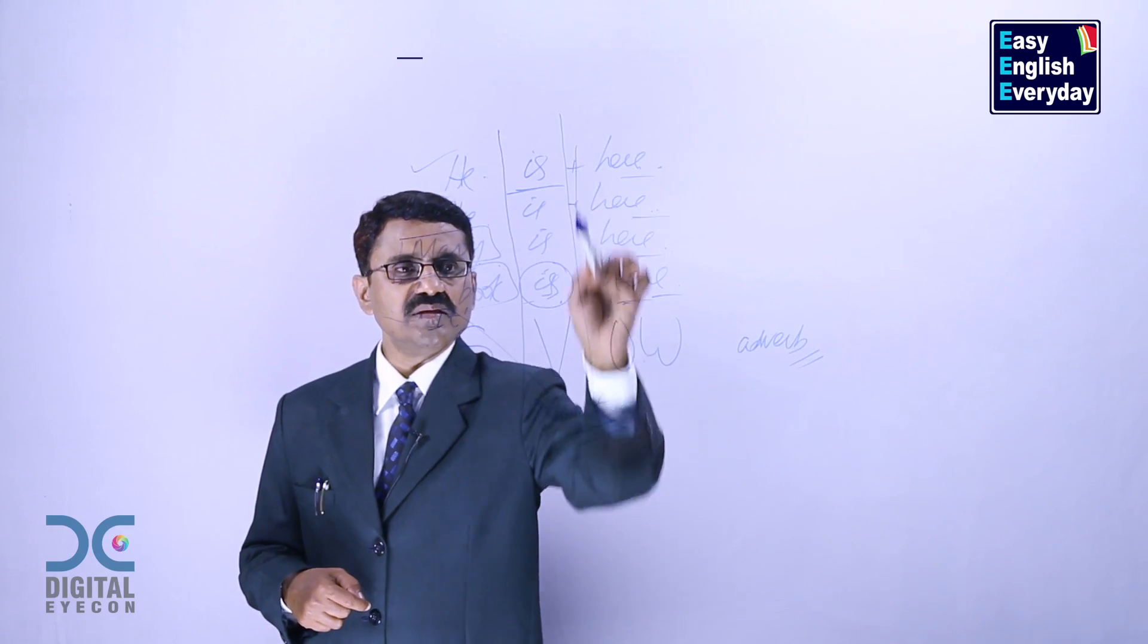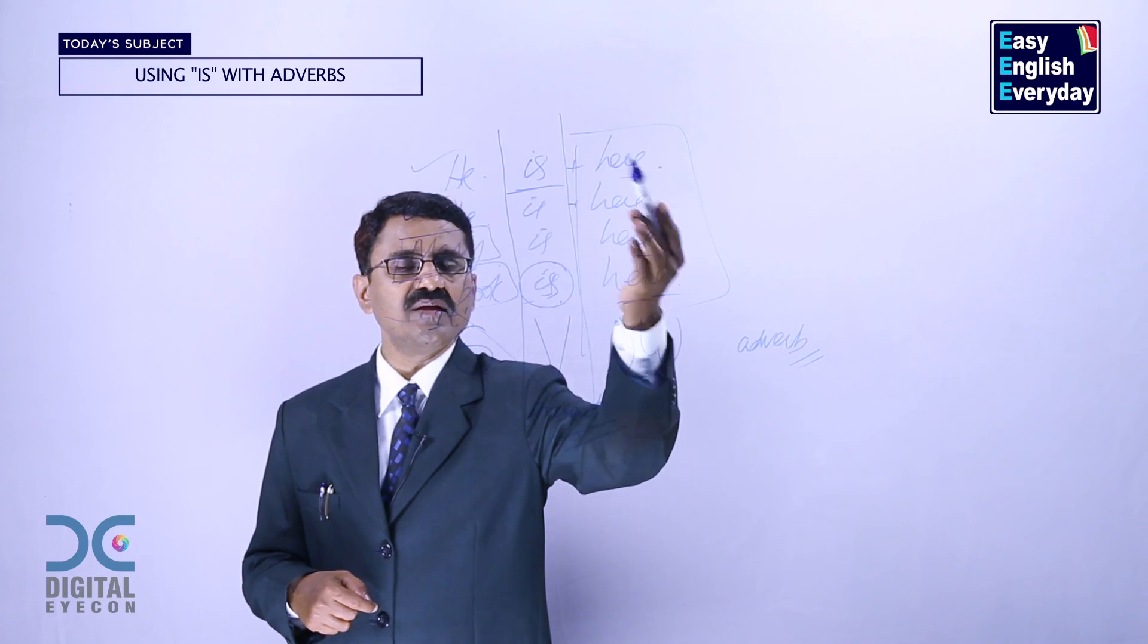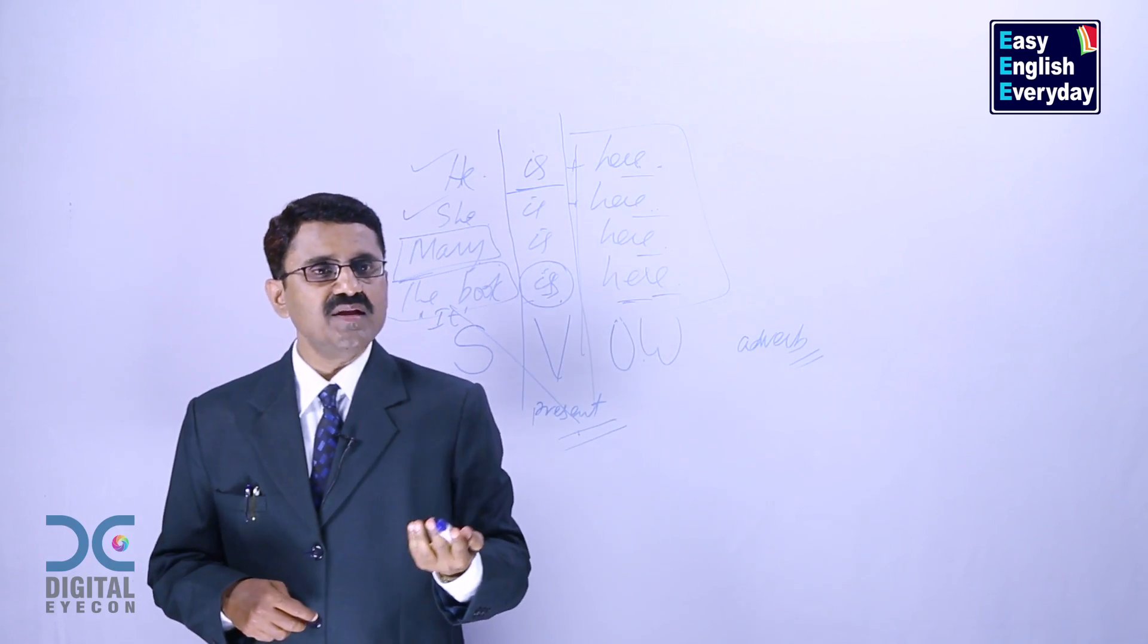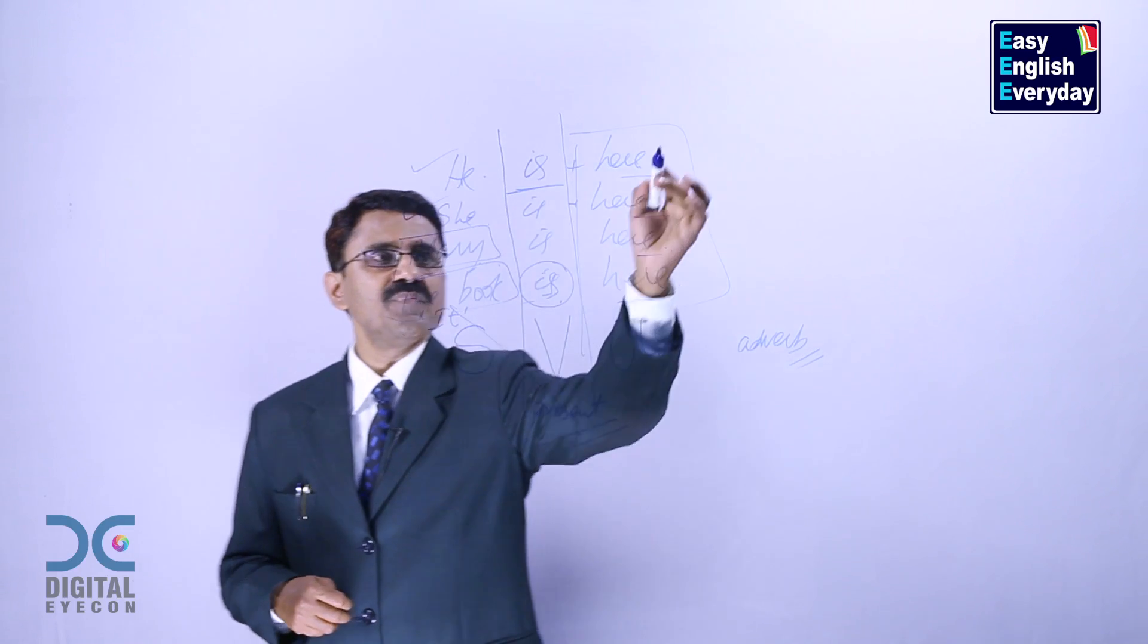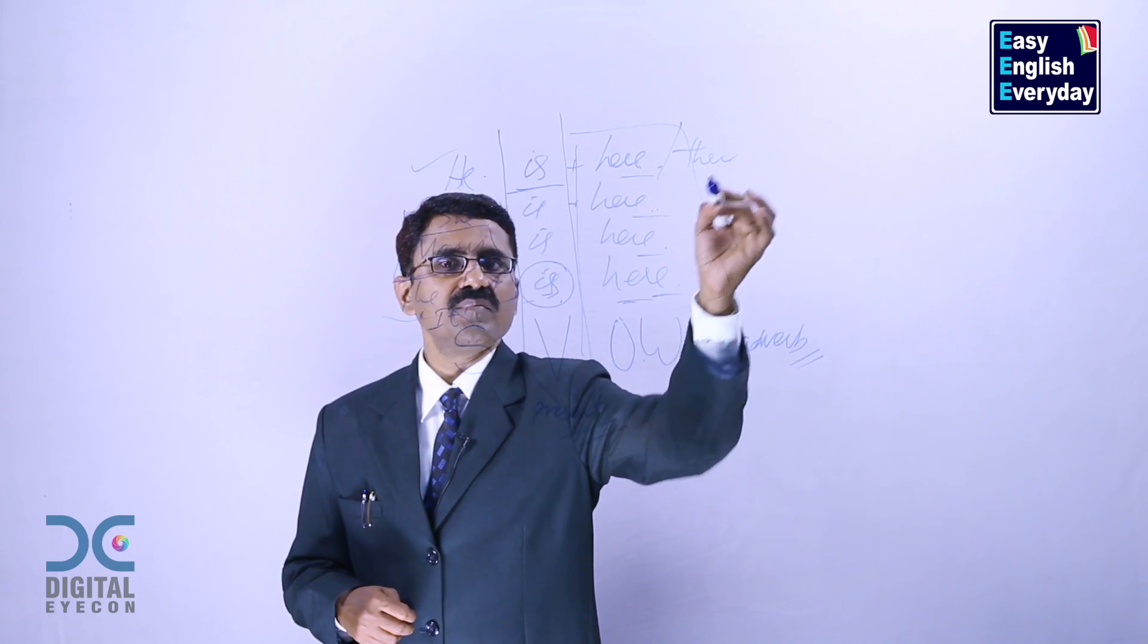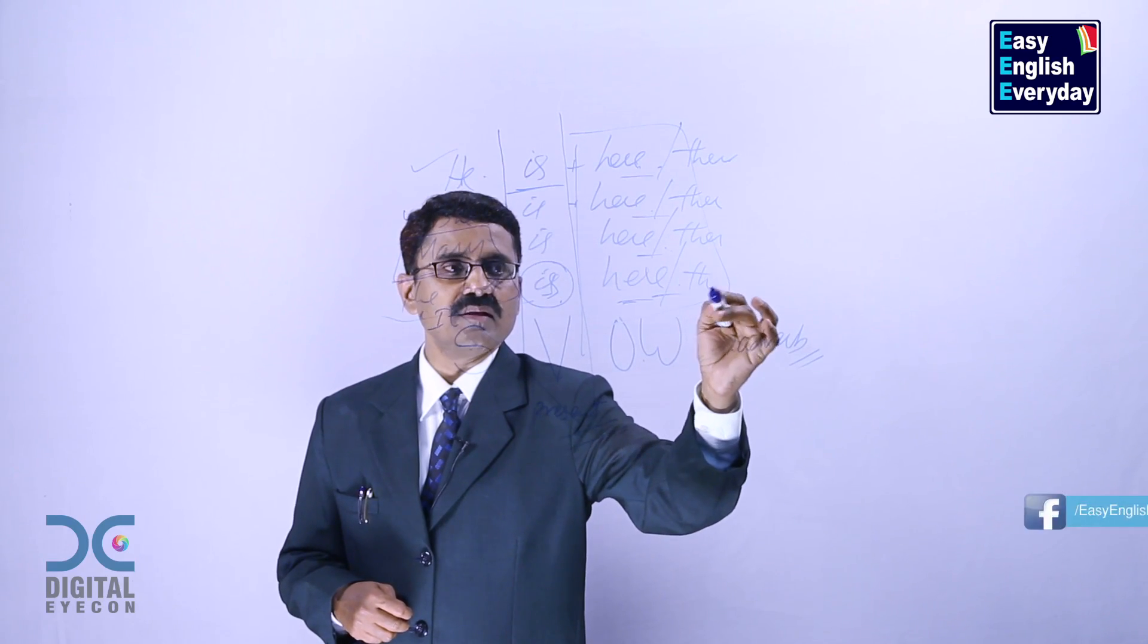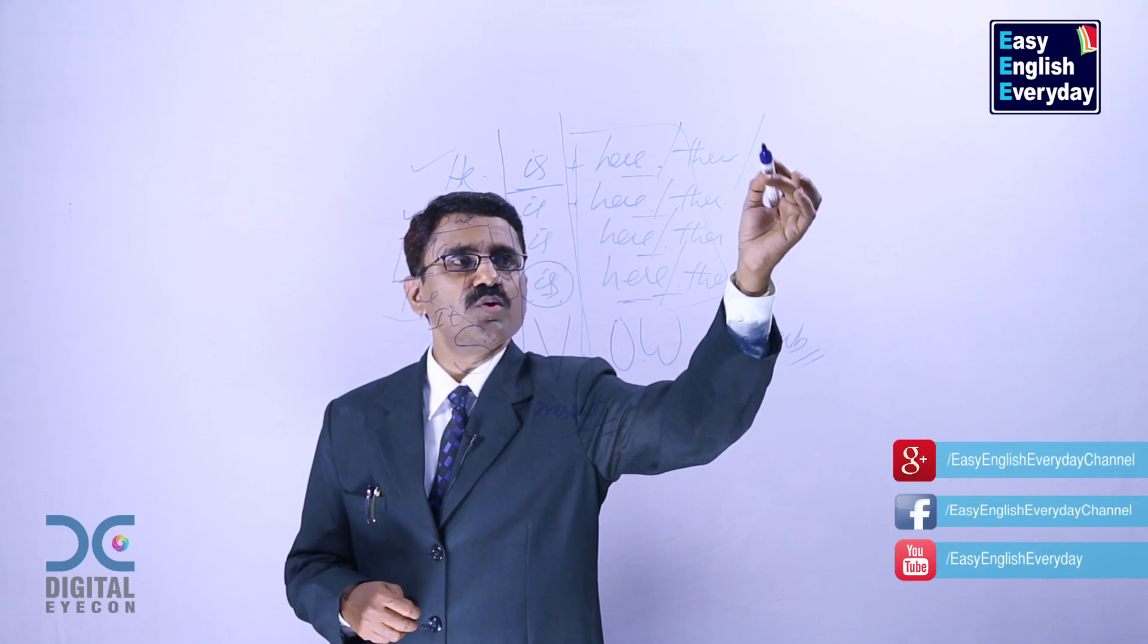Now, here, in this part, we are adding words like this here. He is here. She is here. Mary is here. The book is here. He is there. She is there. Mary is there. The book is there.